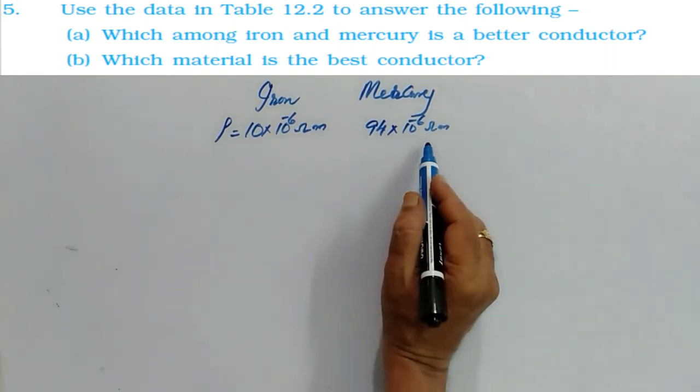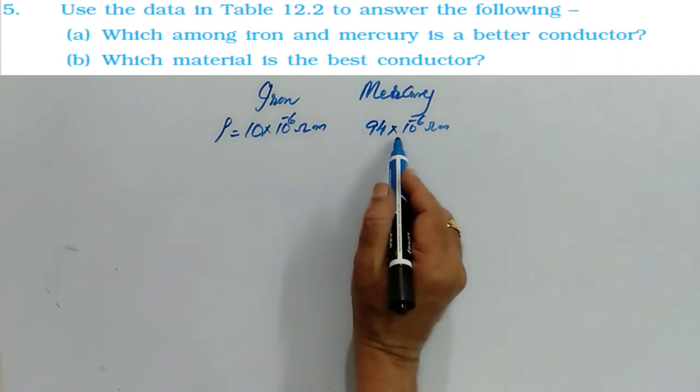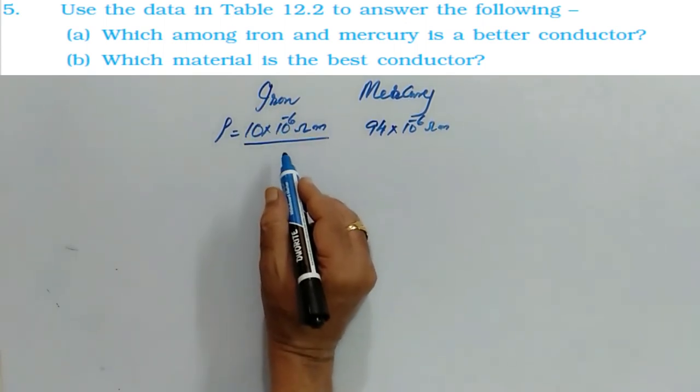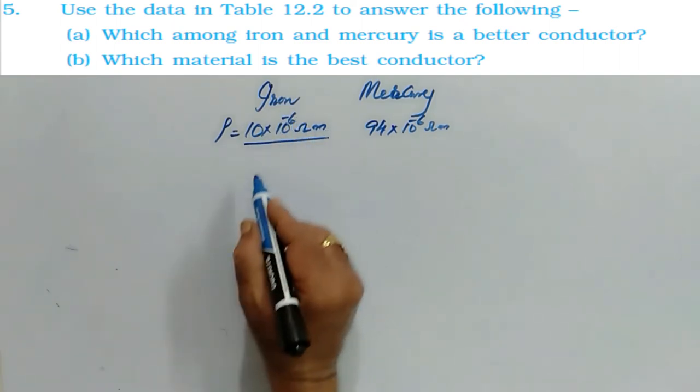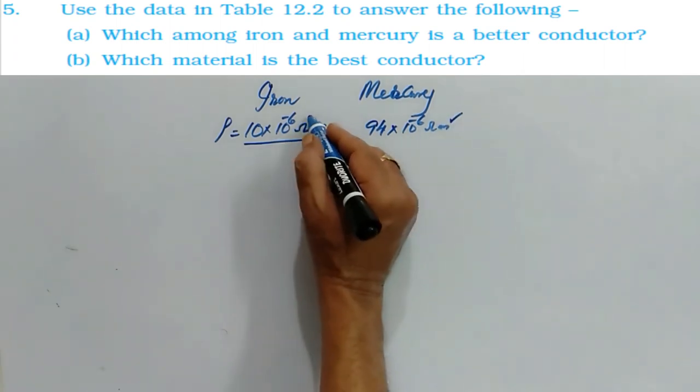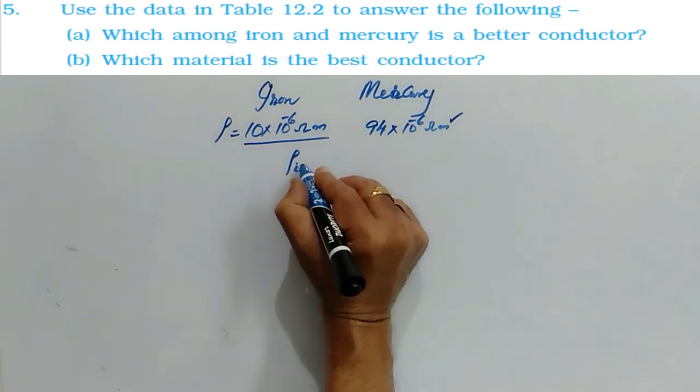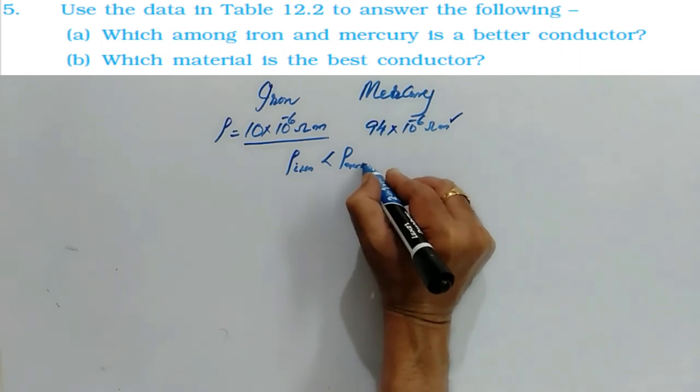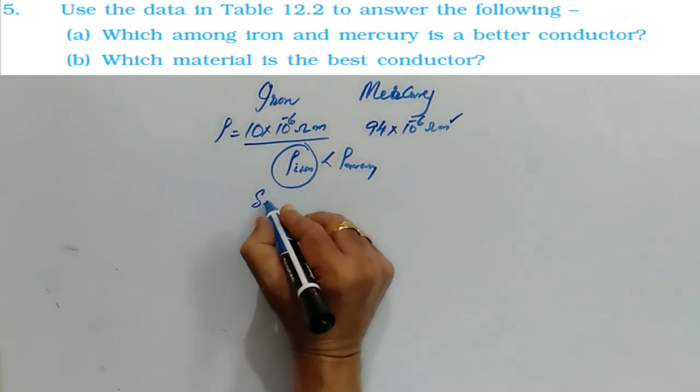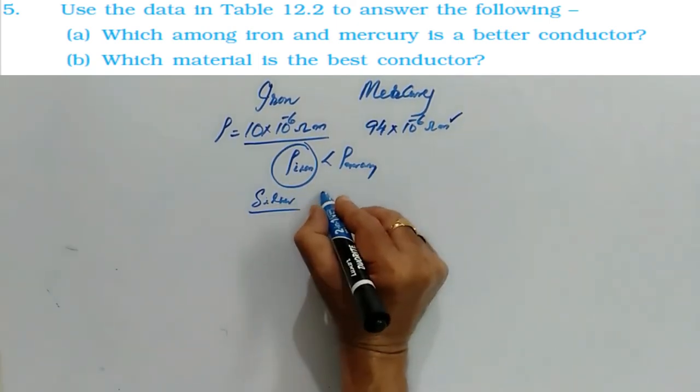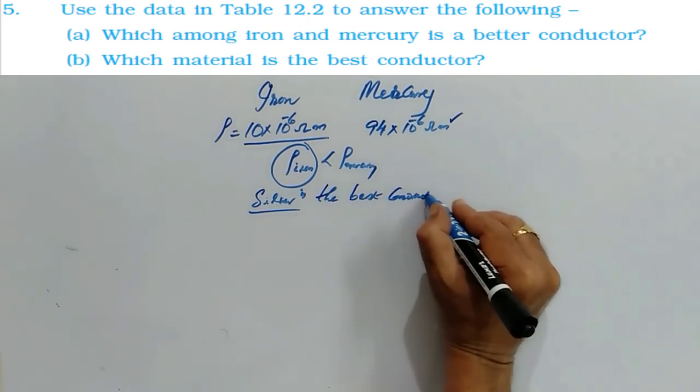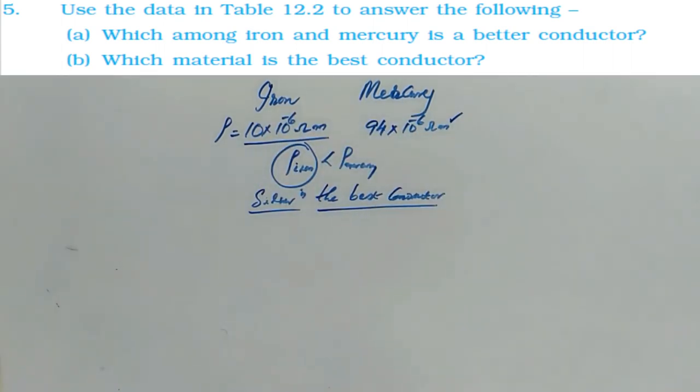In this question, by seeing the table of resistivity, you have to identify which of the two is a better conductor. So here the resistivity is given for iron, the resistivity of iron is given as 10 into 10 to the power minus 6 ohm meter, and for mercury it is 94 into 10 to the power minus 6 ohm meter. So this resistivity is more, this resistivity is less. So rho of iron is less than rho of mercury. Iron is the better conductor. Now in the table, as silver is having the least resistivity, therefore the best conductor is silver. Silver is the best conductor. It was asked in two bits.